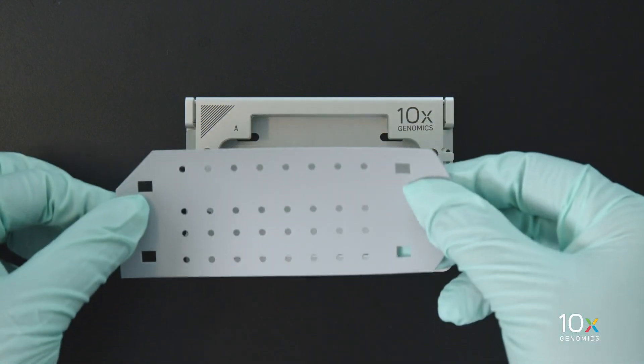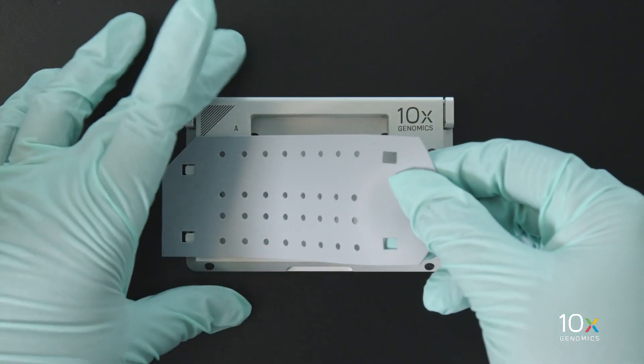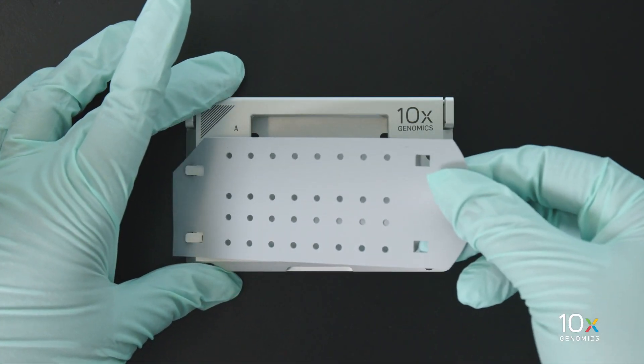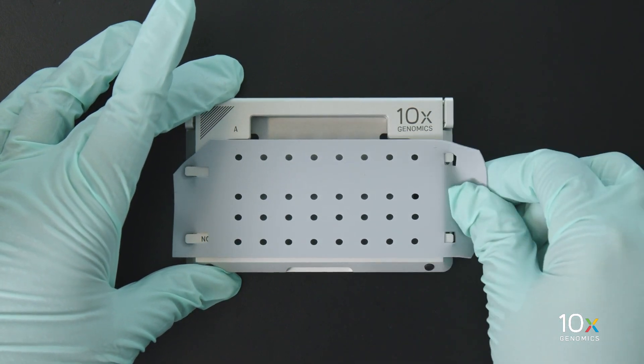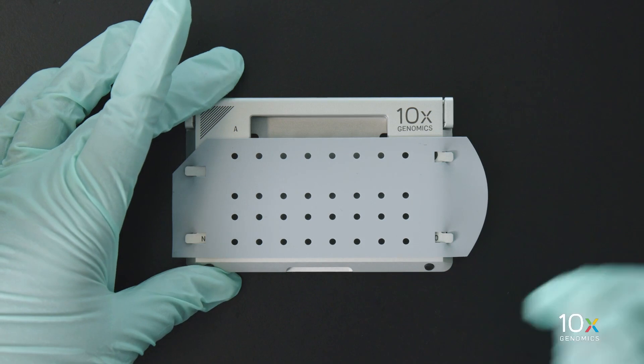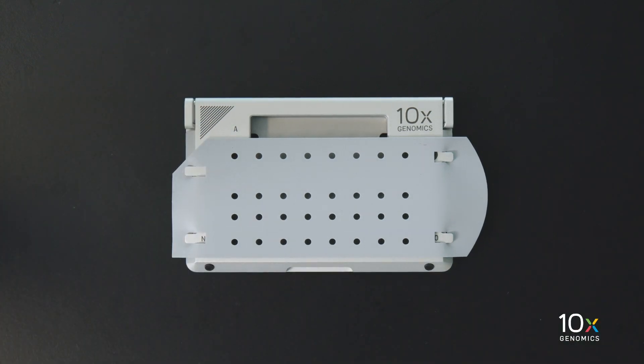Attach the gasket by holding the tongue and hook the gasket on the left-hand tabs of the holder. Gently pull the gasket toward the right and hook it on the two right-hand tabs. Do not touch the smooth side of the gasket. Do not press down on top of the gasket after attachment.